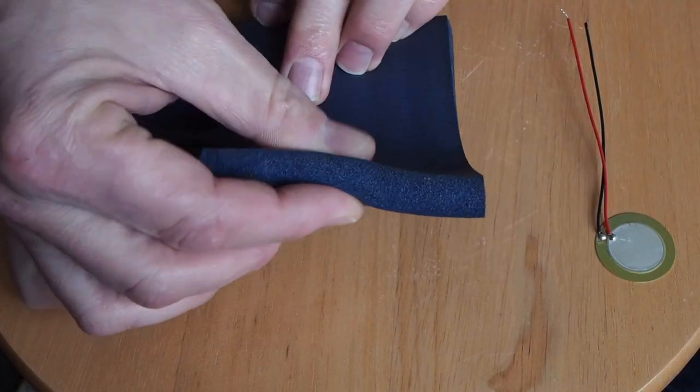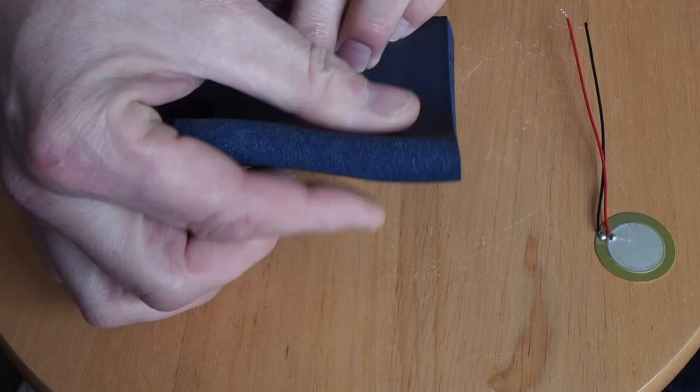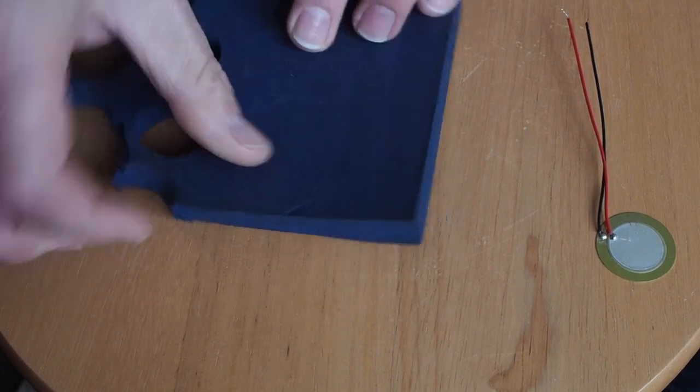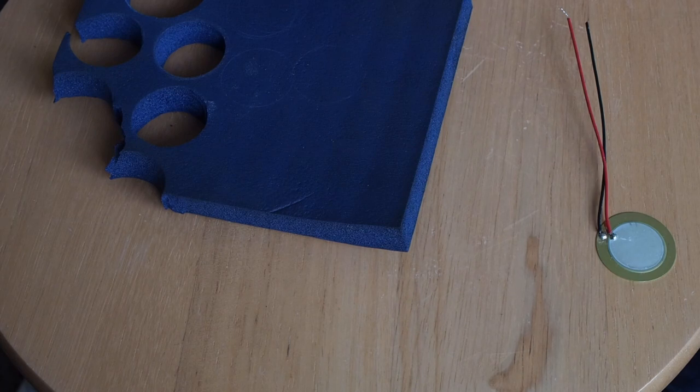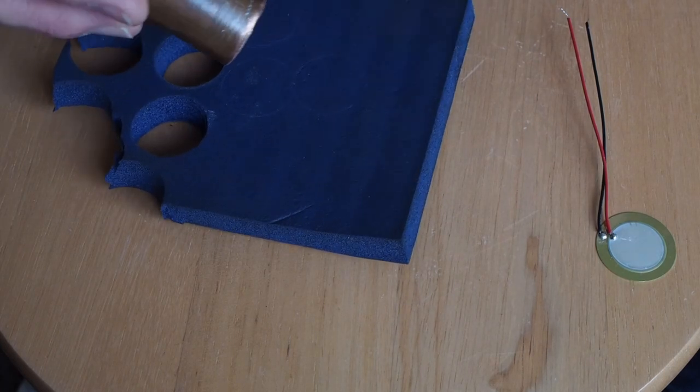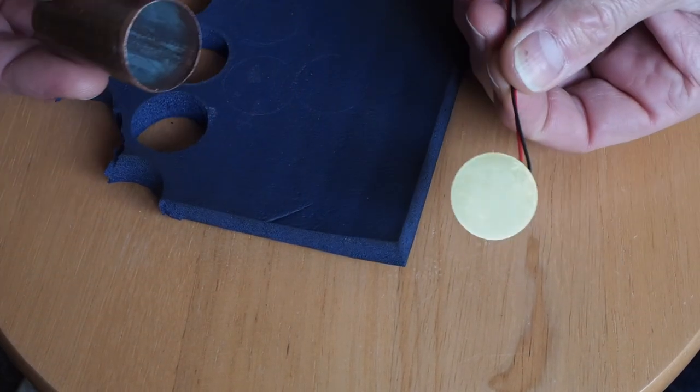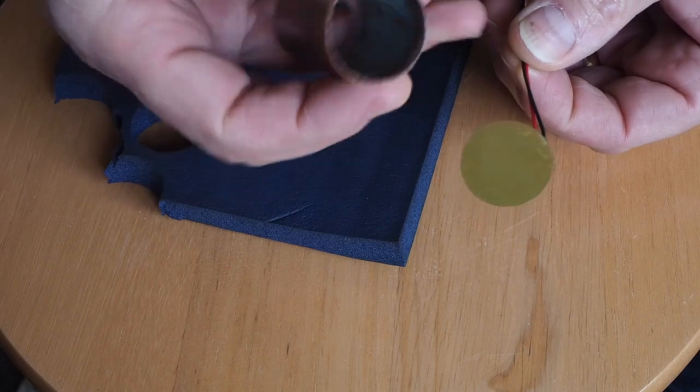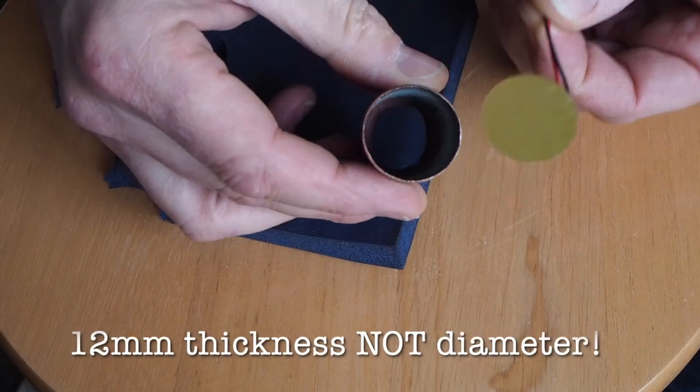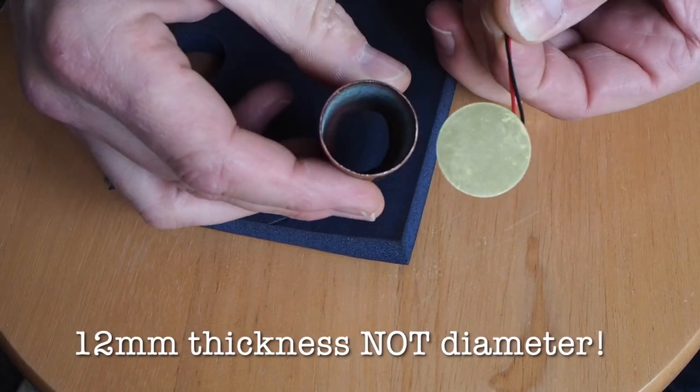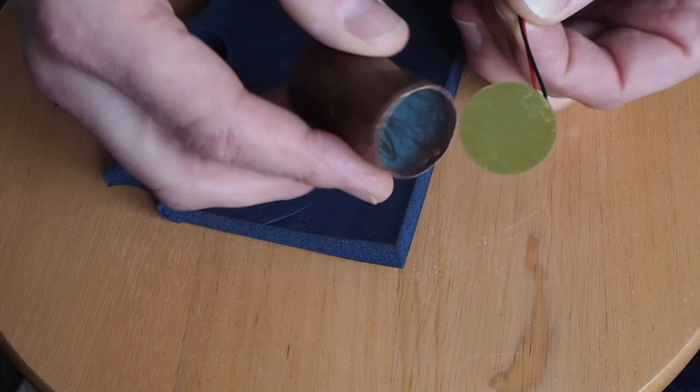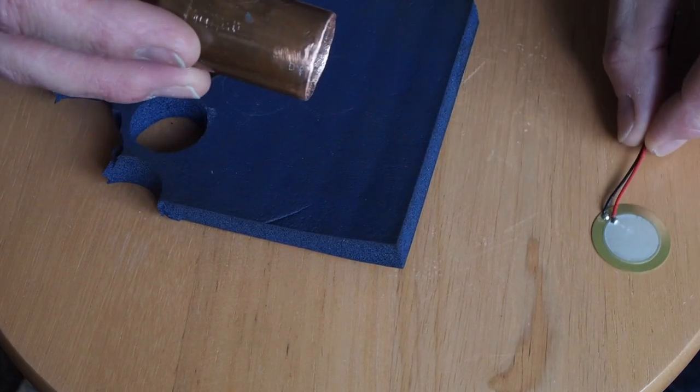You're then going to need some foam, and it has to be a certain type of foam in my experience. This is closed cell neoprene foam about 12 millimeters or half an inch in diameter from an exercise mat.